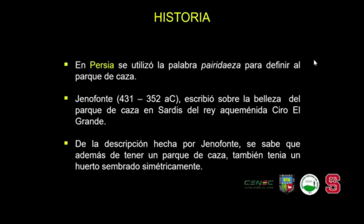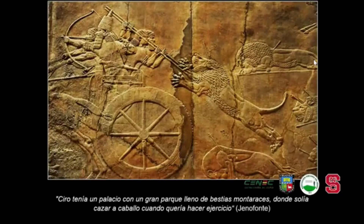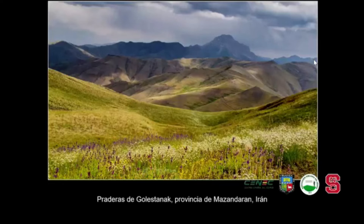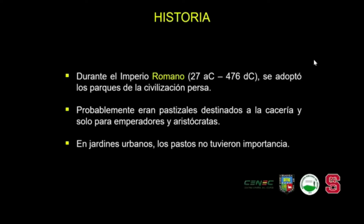En Persia, civilización tan importante en la historia del mundo, se utilizó la palabra paradeisa, que significa paraíso, y también tuvieron cotos o parques de caza. El rey aqueménida Ciro el Grande tuvo uno en el cual Jenofonte, un escritor de esa época, menciona que Ciro tenía un parque lleno de bestias montaraces donde solía cazar a caballo cuando quería hacer ejercicio. Durante el Imperio Romano, que se adaptó a los parques de la civilización persa, probablemente eran pastizales destinados a la cacería utilizados por los emperadores y aristócratas romanos.